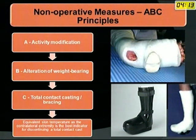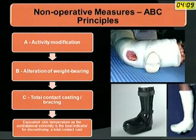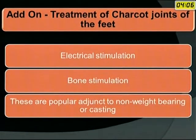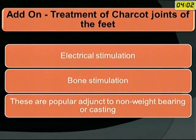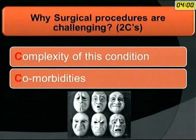The non-operative measures follow ABC principles: activity modification, alteration of weight bearing, and total contact casting or bracing. Add-on treatments like electrical stimulation and bone stimulation are popular adjuncts to non-weight bearing or casting.